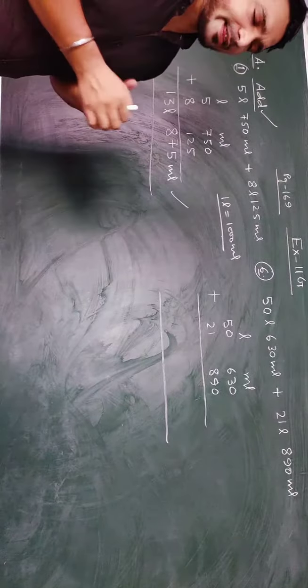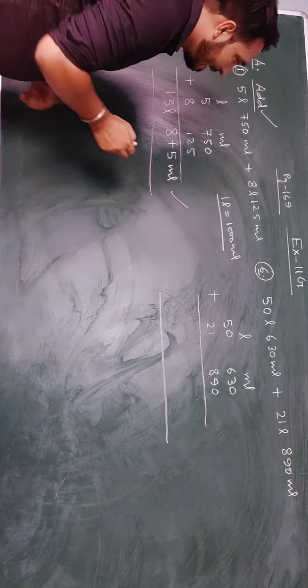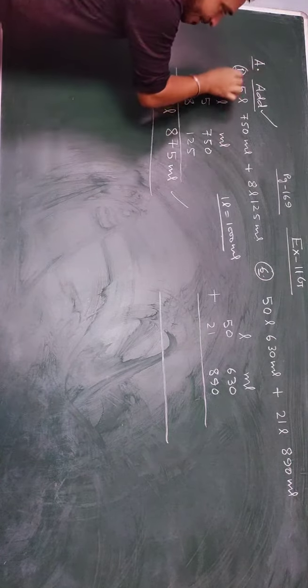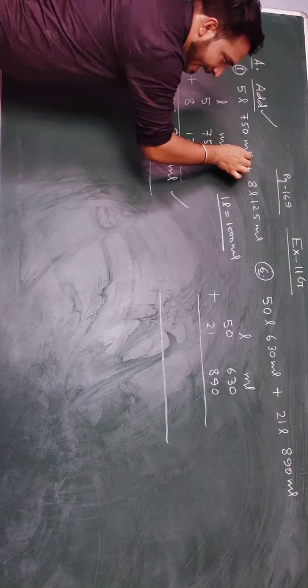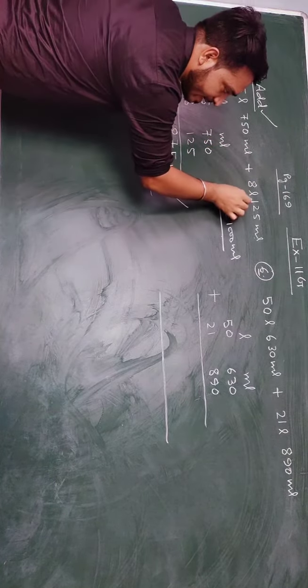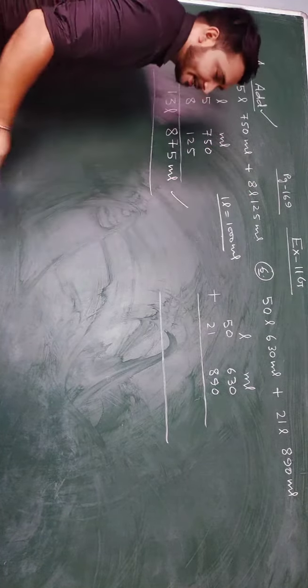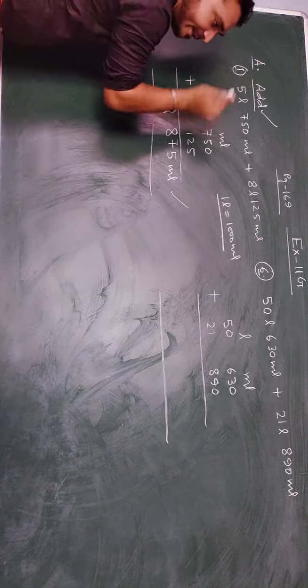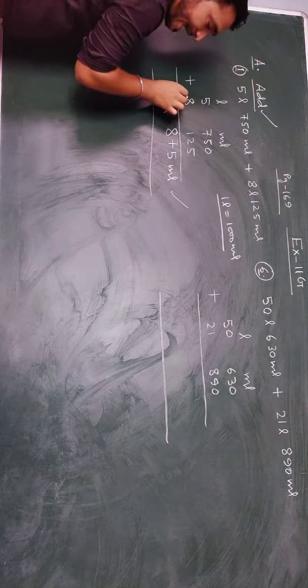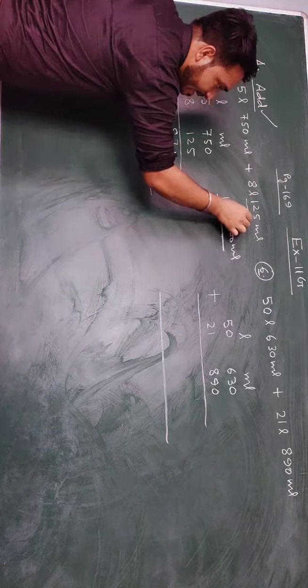In question number 8, that is about the addition of them, I have made two columns, litre and milliliter. I have written the question number 1, 5 litre 750 milliliter and add them with 8 litre 125 milliliter. So in the litre I have written 5, in milliliter I have written 750, in litre I have written 8 and in milliliter I have written 125.